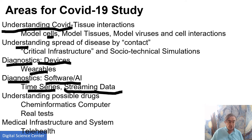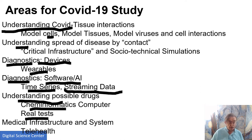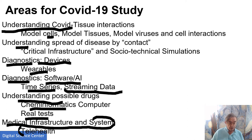Looking at some of the things from the last lesson: understanding possible drugs. Originally this was called cheminformatics. Now it's being done by computer studies, and the cheminformatics is becoming deep learning networks. Previously, maybe ten years ago, deep learning didn't exist and the field was a bit of a struggle. Then we have the whole medical infrastructure and telehealth as a prominent new development. These are just broad areas you could think about further studying.